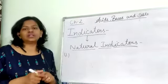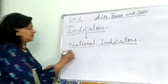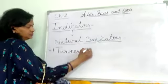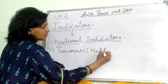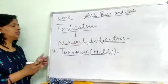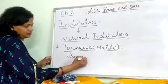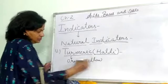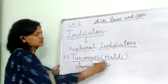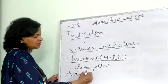The next natural indicator is one we use at home — turmeric, also called haldi. It is used as a spice and also works as a natural indicator. Its natural color is orange-yellow. In the presence of acid, the color does not change — it remains unchanged.